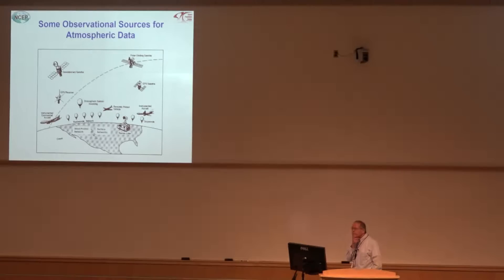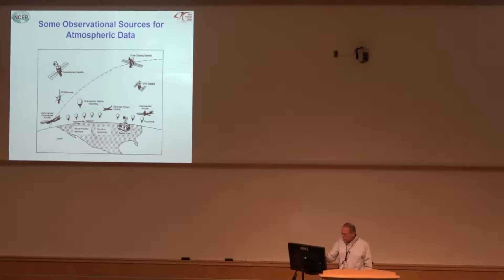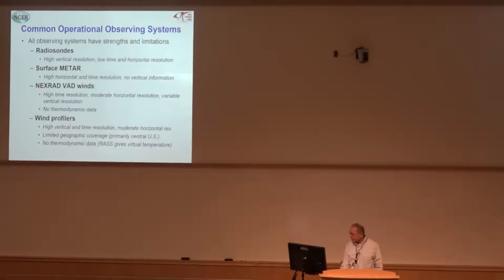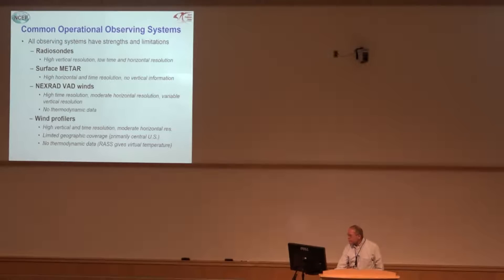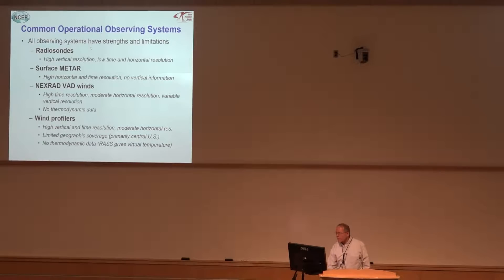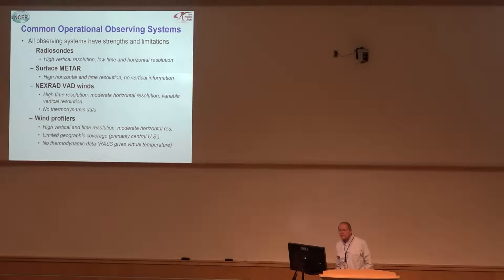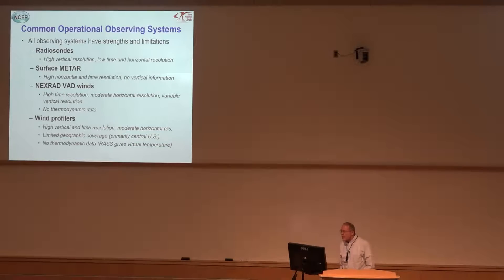Here's a cartoon of different observational data sources from different types of satellites, radiosondes, aircraft, surface networks, etc. One of the things we have to recognize is that all observing systems have strengths and limitations. Radiosondes give us really good vertical resolution, but pretty poor time resolution — typically only twice a day — and horizontal resolution isn't good, with large gaps between the radiosondes.